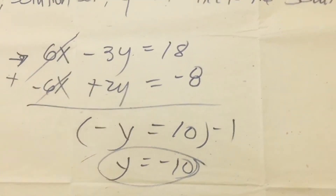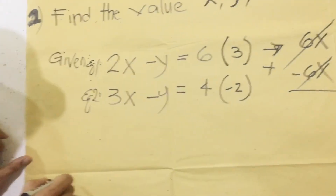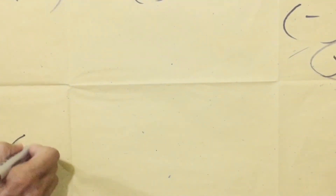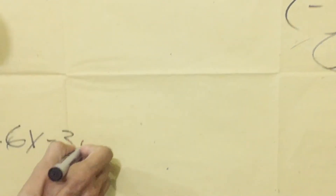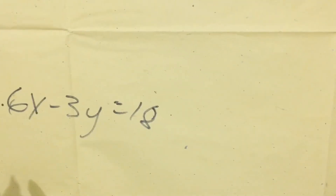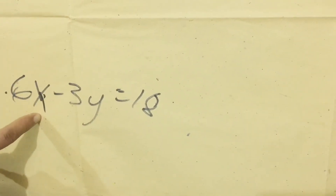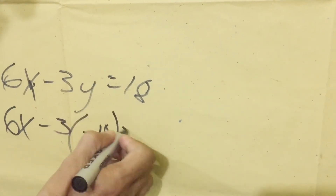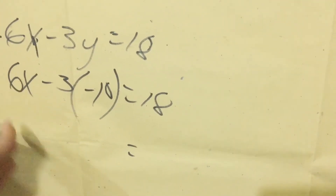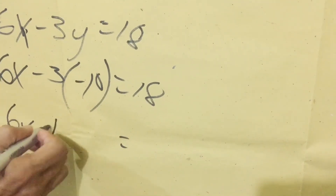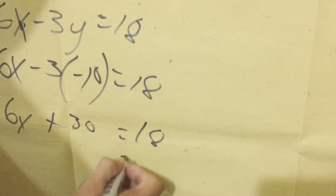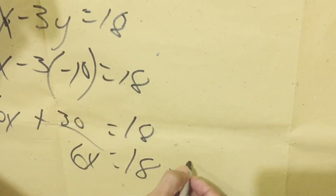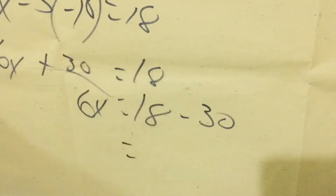Next, we find the value of x using equation 1: 6x minus 3y equals 18. We substitute the value of y, which is negative 10. So we have 6x minus 3 times negative 10 equals 18. Simplifying, we get 6x plus 30 equals 18. Transposing 30, it becomes negative 30 — don't forget to change the sign when transposing.